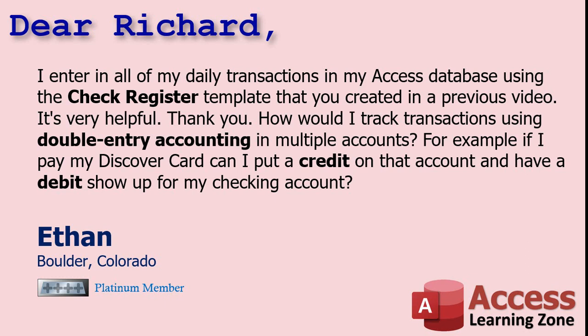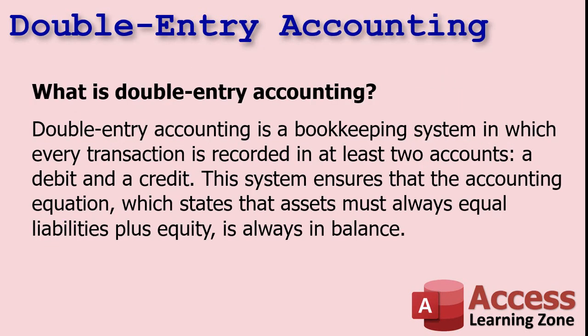We'll have to add an account table to the database, and then I'll show you how to put the transactions in properly. For those of you who don't know what double entry accounting is, it's basically a bookkeeping system in which every transaction gets recorded in two accounts. In double entry, you've got two entries for each transaction — an entry in your debit account and an entry in your credit account. One's your assets, one's your liability, and they should always be in balance.